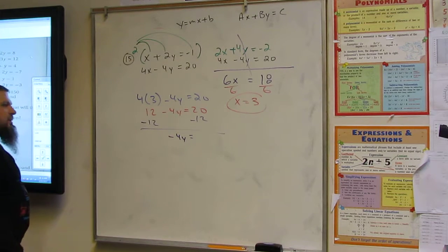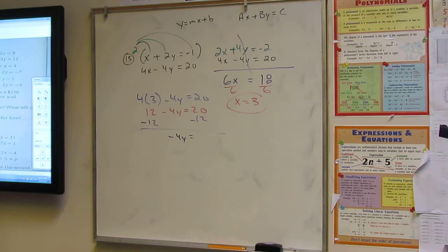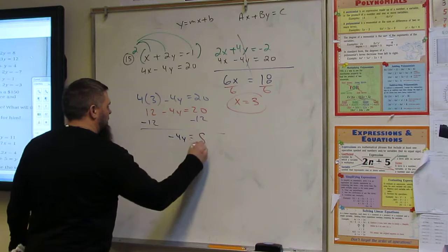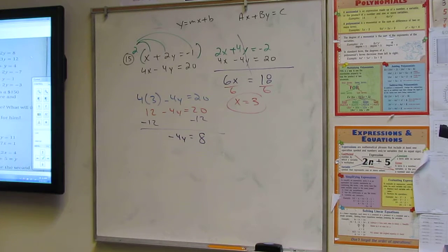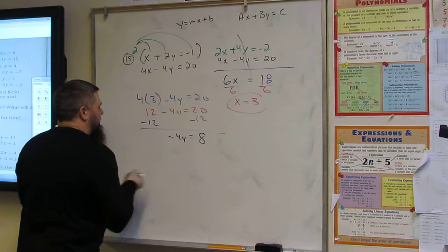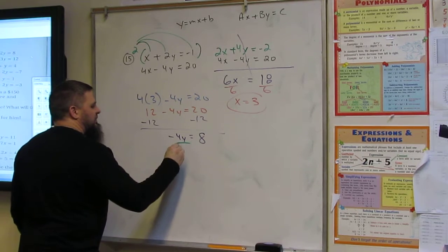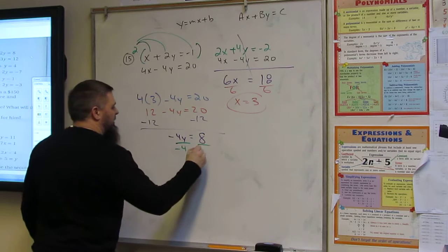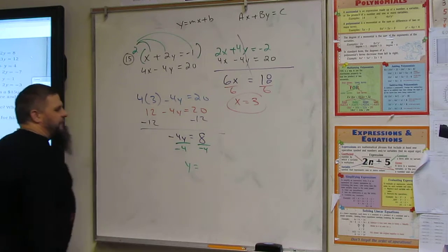Twenty minus twelve? Eight. Come on, people. All right. Now what? Divide by negative four. Y equals what? Negative two.